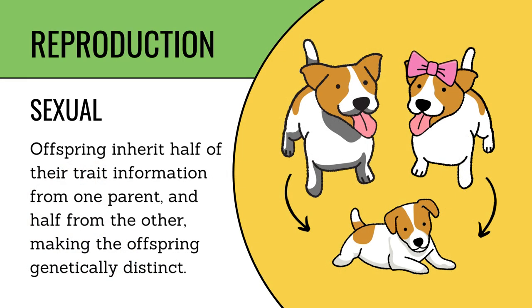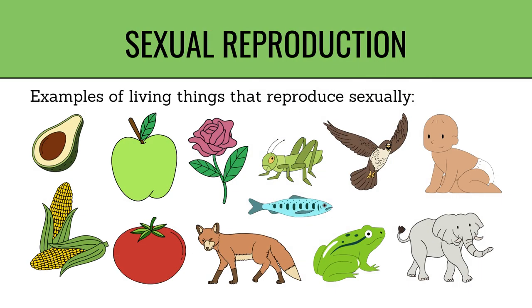In sexual reproduction, offspring inherit half of their trait information from one parent and half from the other, making the offspring genetically distinct. Examples of living things that reproduce sexually include fruits and vegetables like avocado, apple, tomato, and corn, and plants and animals such as rose flower, grasshopper, fish, eagle, fox, toad, elephant, horse, and humans.